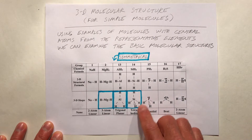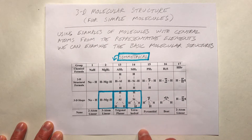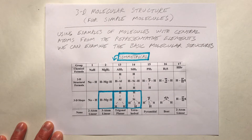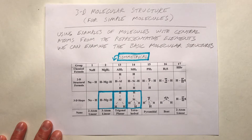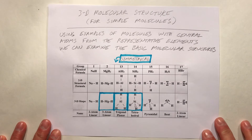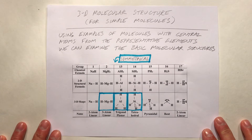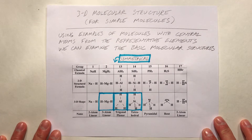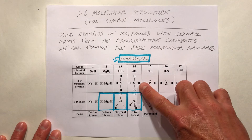Notice that because electrons are negative, and negative repels negative — that's the law of electrostatics, like charges repel — electrons are going to be moved as far apart as possible in three dimensions.